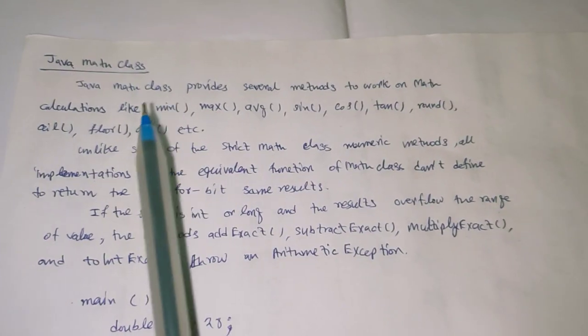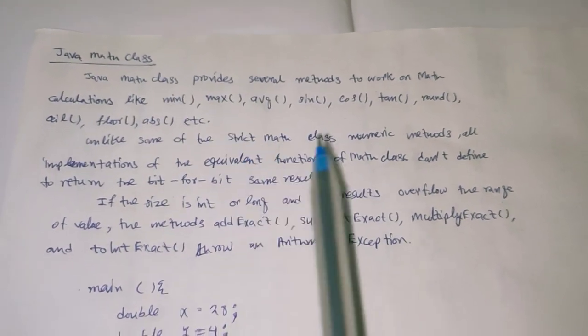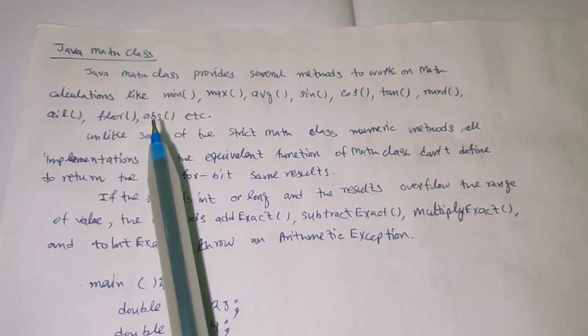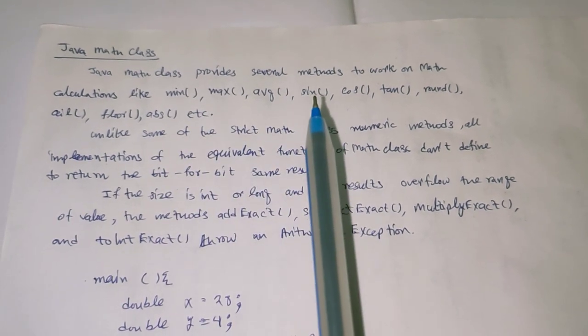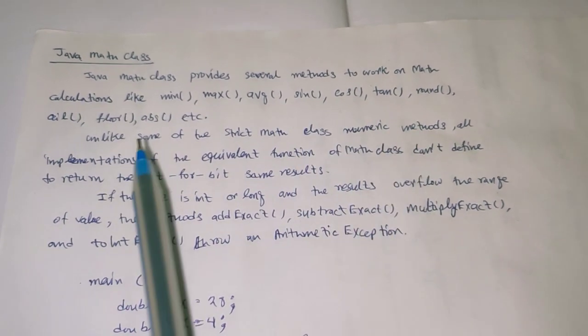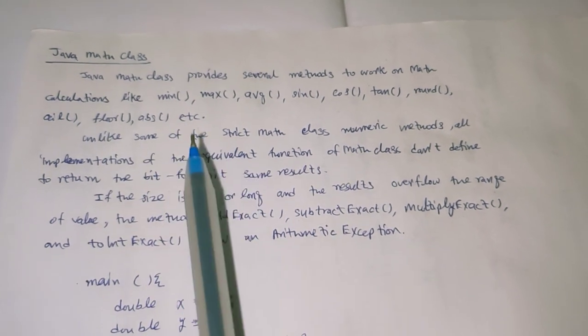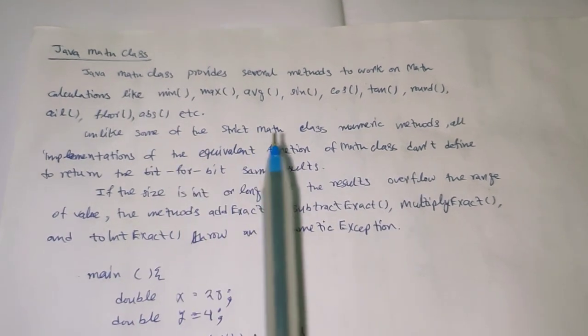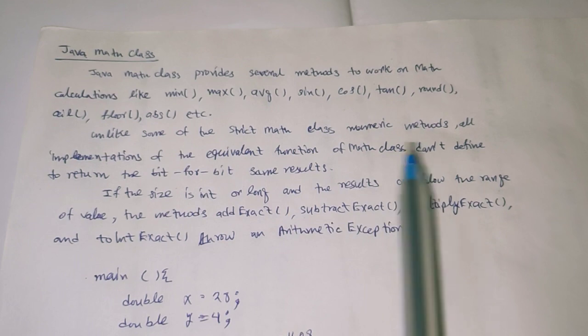We're discussing Java math class. Java math class provides several methods to work on math calculations like minimum, maximum, average, sine, cosine, round, ceil, floor, abs, etc. Unlike some of the strict math class numeric methods, all implementations of the equivalent functions of math class don't define to return bit-for-bit same results.